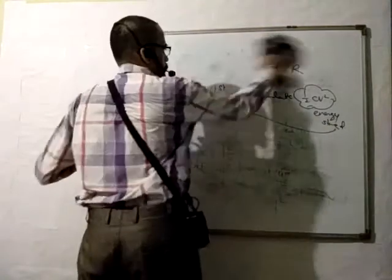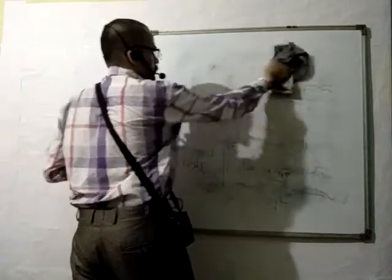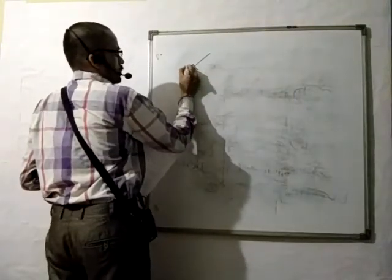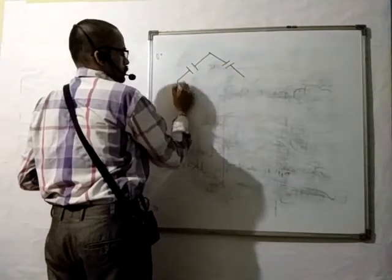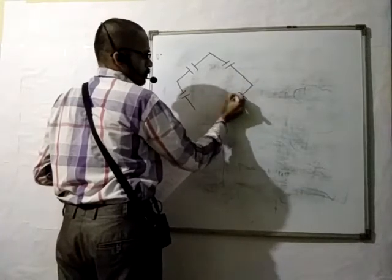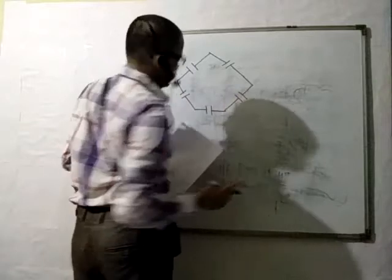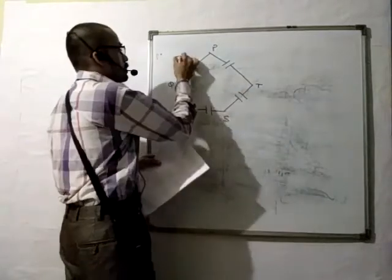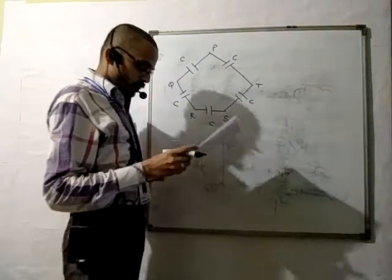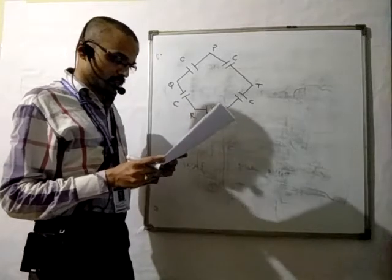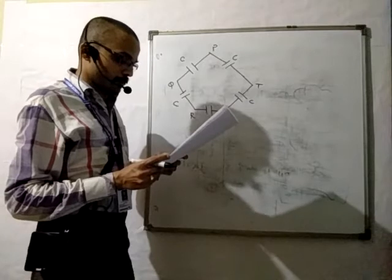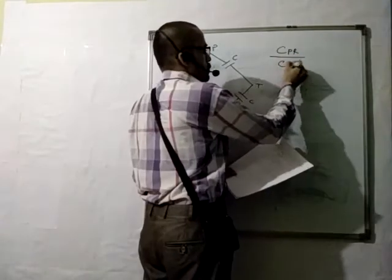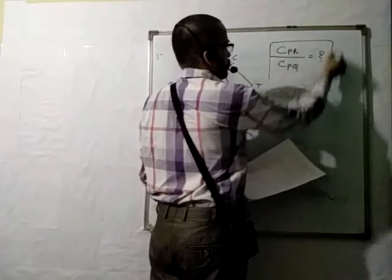Let's go to the next problem. Five capacitors, each of capacitance C, are connected as shown in the figure. The ratio of capacitance between P and R to the capacitance between P and Q is to be found. You may try by pausing the video.